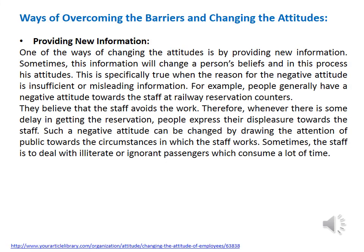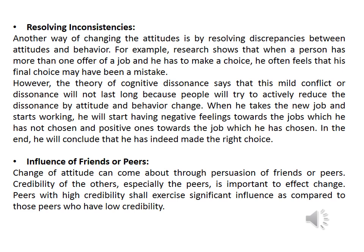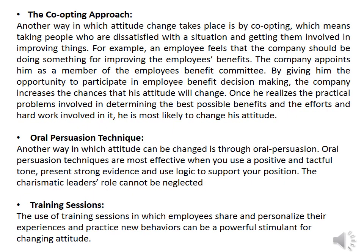Also, some policies you have to follow in order to overcome the barriers that research has suggested: provide new information for your employees about new policies and why they have to change their attitudes. You also have to resolve any inconsistencies caused by cognitive dissonance. You cannot neglect the influence of friends or peers in the workplace. Research suggests that the co-opting approach — making employees participate in decision-making — is another way attitudes can be changed. We also consider oral persuasion, charismatic leaders' role, and training sessions.